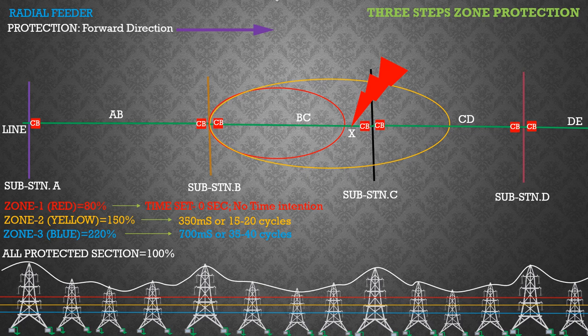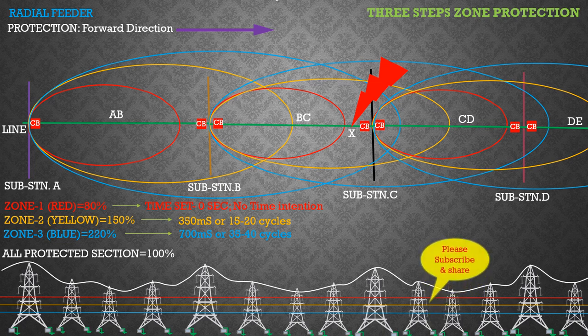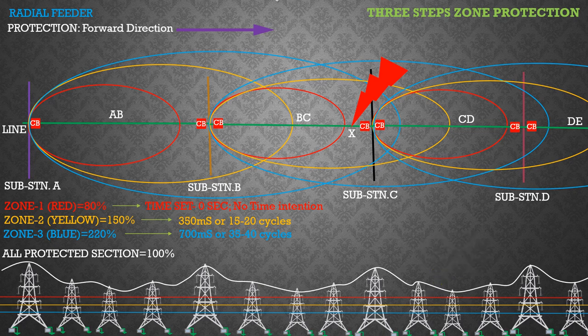It is clear that the Zone 2 relay at substation B will operate to trip its respective circuit breaker, and line AB will remain healthy, because Zone 2 protection operates faster than Zone 3 protection. In distance protection relays, a particular zone of protection operates when the fault is within that zone, and other zones remain inoperative, as the impedance and time of each zone are different. This time-impedance characteristic is a great advantage for selecting zones for protection.